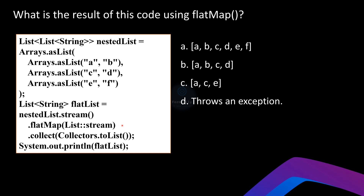The `stream` method converts the nested list into a stream, allowing us to perform stream operations on each inner list using `flatMap`. The `flatMap(List::stream)` method is used to flatten or combine streams from a nested structure. It takes each inner list and converts it into an individual stream, then merges them into a single continuous stream: A, B from the first list; C, D from the second; E, F from the third — all combined into [A, B, C, D, E, F]. We then collect using `Collectors.toList`. Option A is correct.